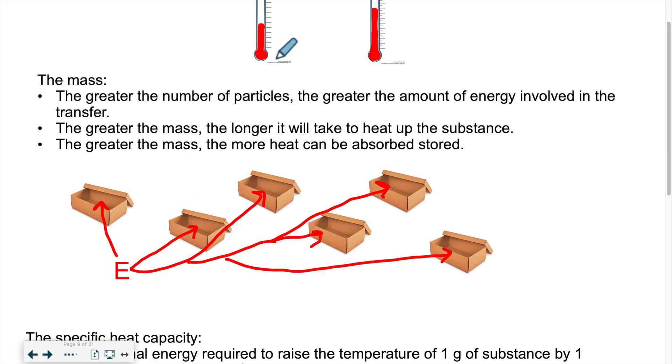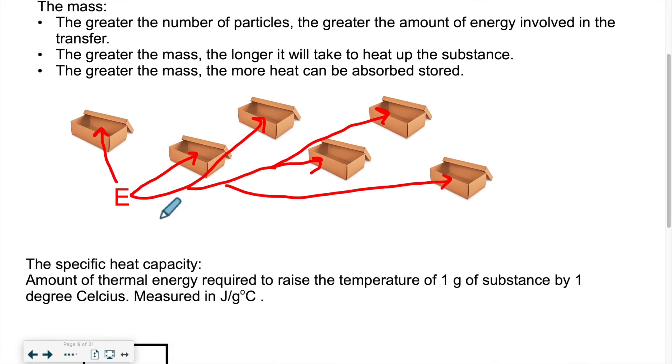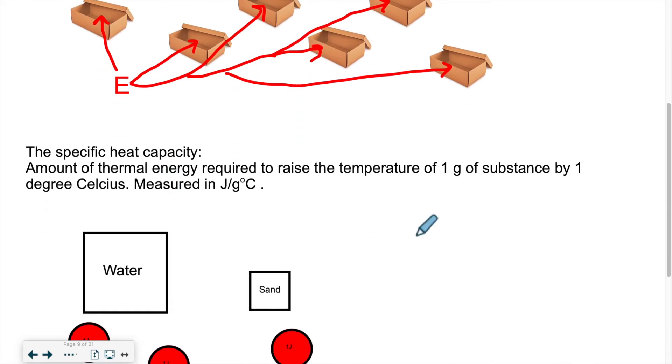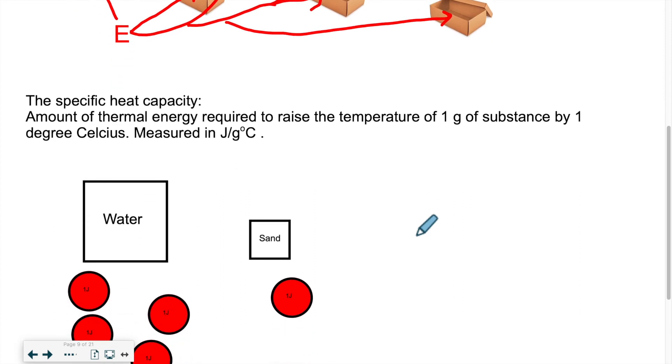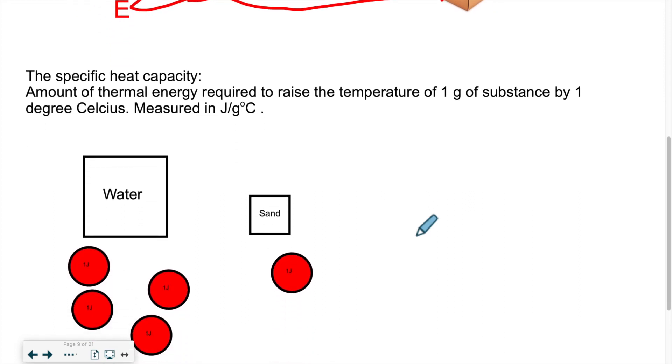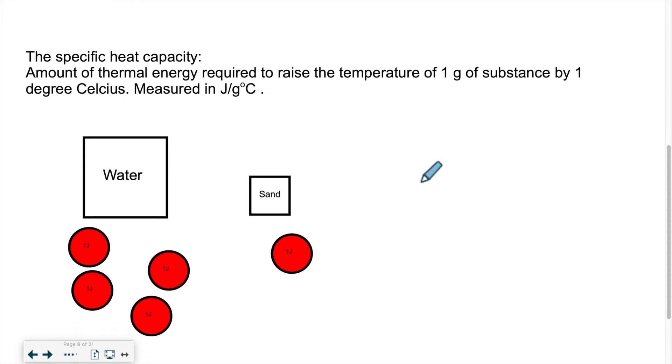So first, the change of temperature is a factor, and then the mass is a factor. The last one is the type of substance we're dealing with. So this is related to the specific heat capacity. There is a certain measurement that is linked to the type of substance we're looking at, which essentially tells us that the amount of energy needed to warm up the substance is specific to that substance. So the real definition is the amount of thermal energy required to raise one gram of substance by one degree Celsius. It's measured in joules per gram per degree Celsius.